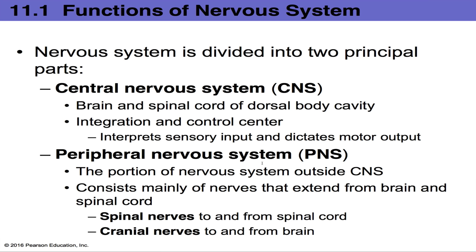Although we have a single nervous system, we divide it into two principal parts for convenience: the CNS (Central Nervous System) and the PNS (Peripheral Nervous System). The CNS consists of the brain and spinal cord, located in the dorsal body cavity. The spinal cord is protected by the vertebral column and the brain is protected by the cranium. The CNS is the main integration and control center — it receives sensory inputs, interprets them, sends motor outputs, and is the source of decision-making, memory, thought, and emotion.